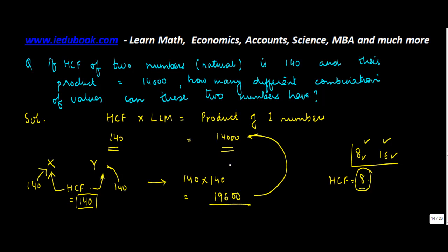But we are told that the product of these two numbers is 14,000, which means that there cannot be any two numbers X and Y whose HCF is 140 and the product is 14,000.